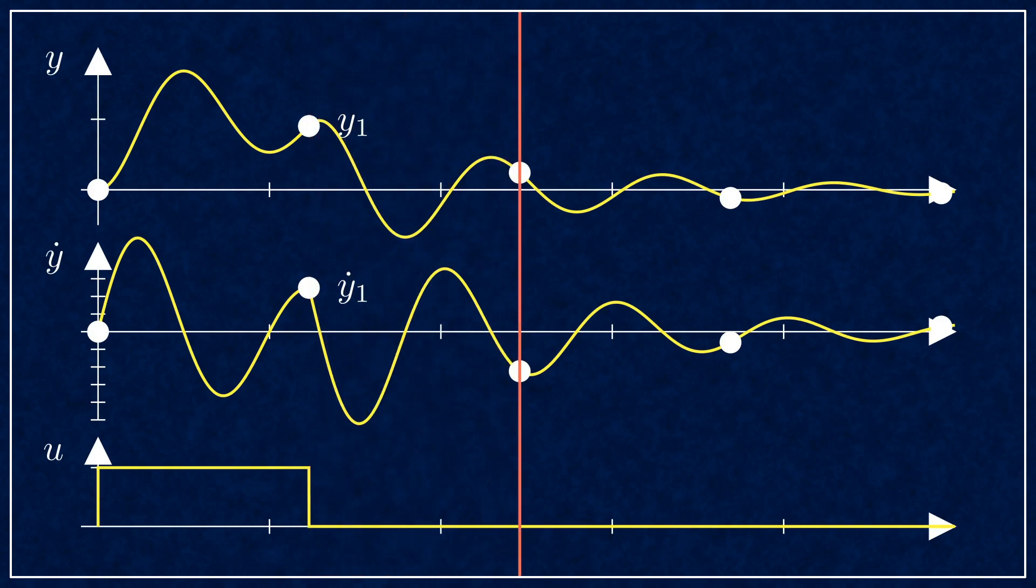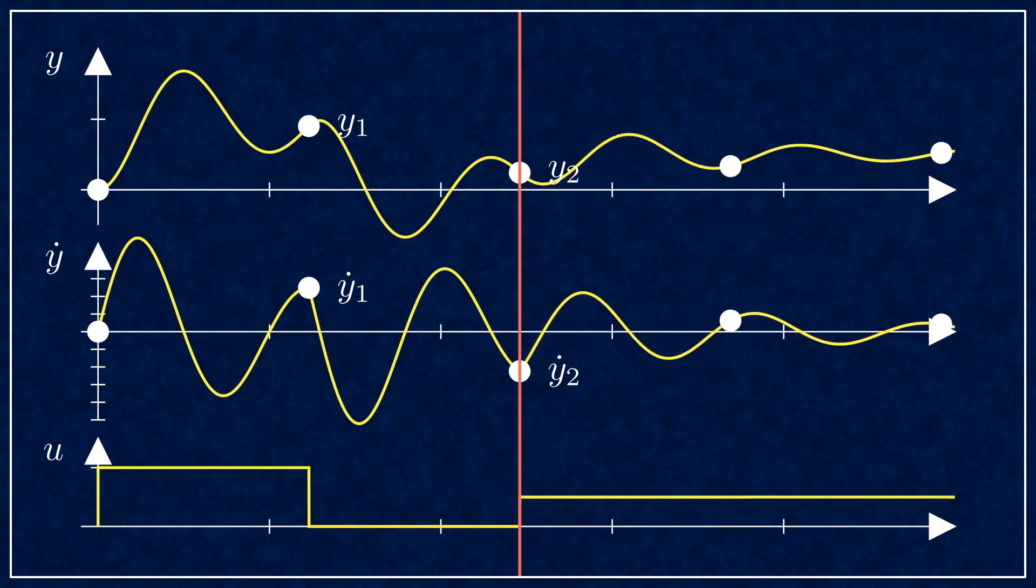The key to this process is the zero order hold on the DAC output. Thanks to the zero order hold, the input to the plant is piecewise constant.